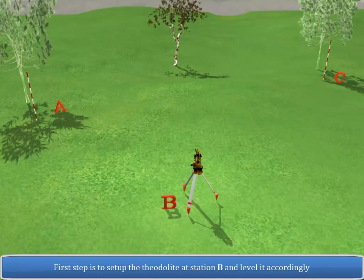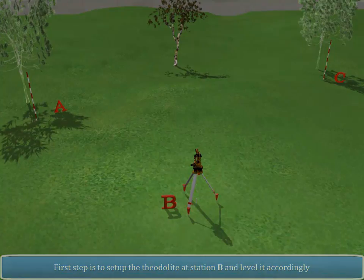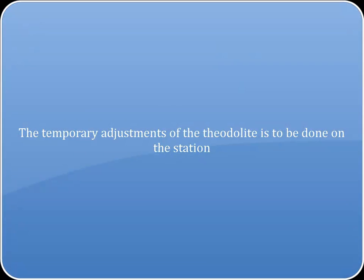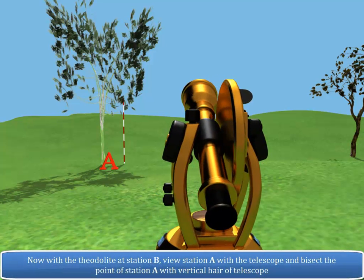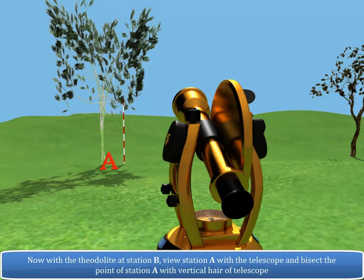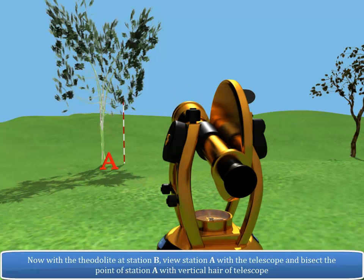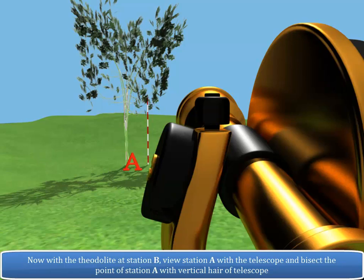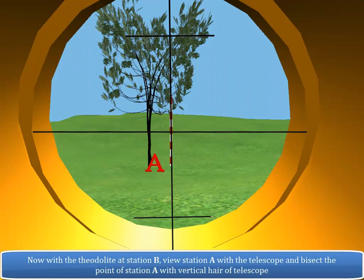First step is to set up the Theodolite at station B and level it accordingly. The temporary adjustments of the Theodolite is to be done on the station. Now, with the Theodolite at station B, view station A with the telescope and bisect the point of station A with vertical hair of telescope.